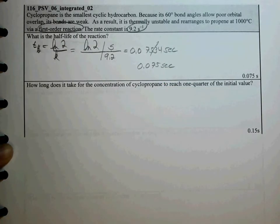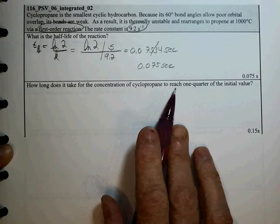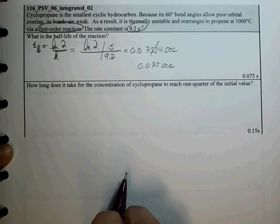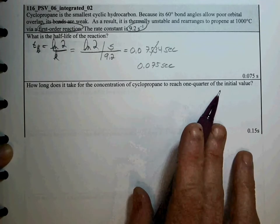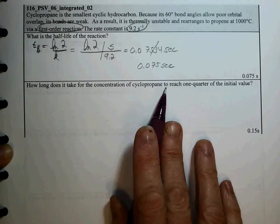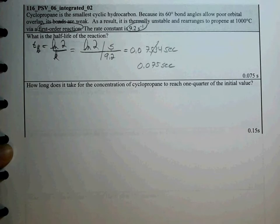The second question: how long does it take for the concentration to reach 1 quarter of its initial value? There's two ways we can solve this. Number one, we can recognize that for a first-order reaction, our half-life is constant, and 1 quarter of the initial value would indicate two half-lives have evolved.